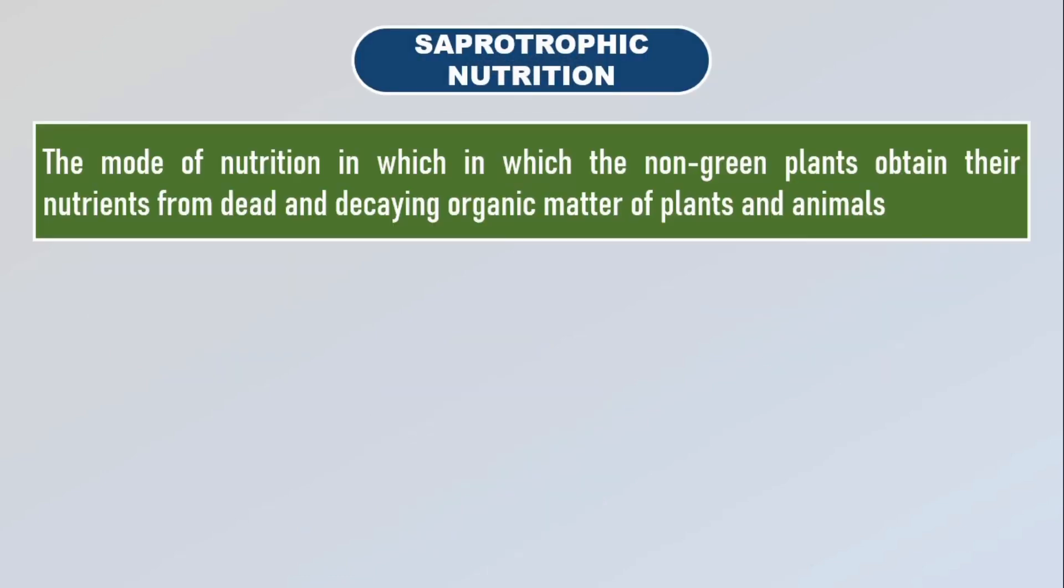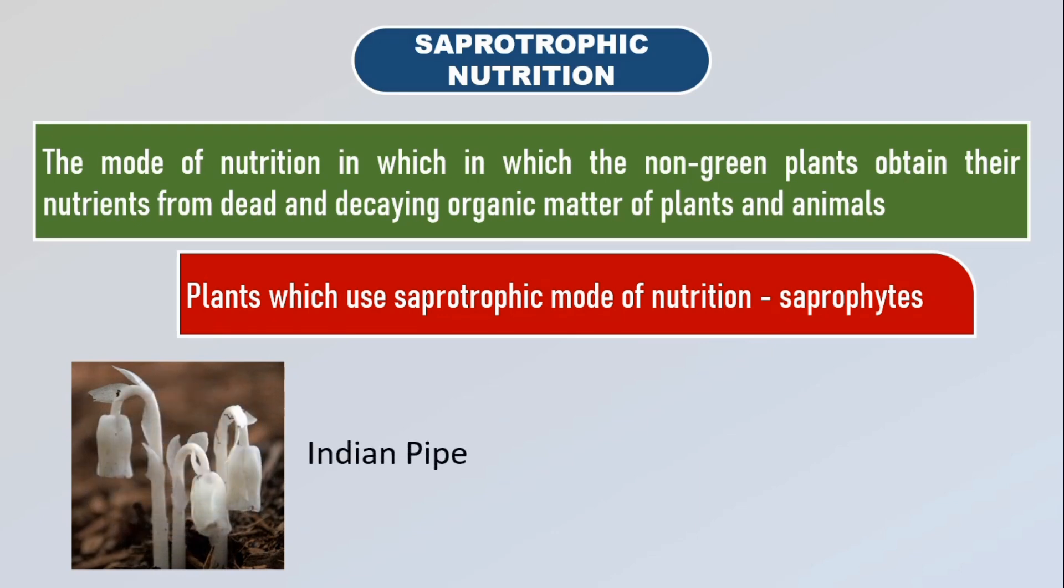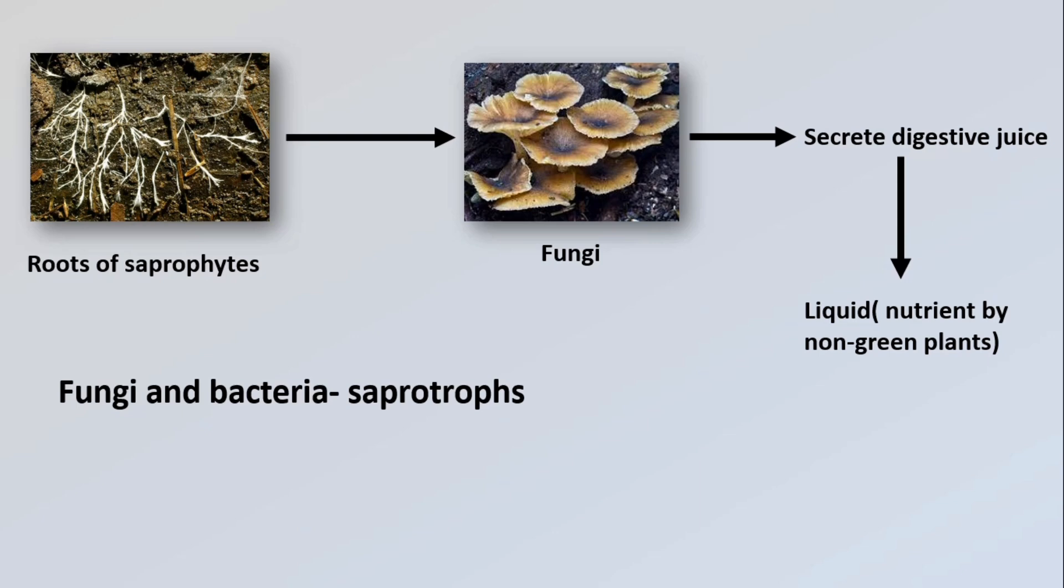Saprotrophic nutrition is the mode in which non-green plants obtain their nutrients from dead and decaying organic matter of plants and animals. The plants which use saprotrophic mode are called saprophytes, like Indian pipe and coral root. The roots of saprophytes contain organisms called fungi which secrete digestive juices on the dead matter and convert it into liquid used as nutrient. Fungi like mushrooms and yeast and bacteria are known as saprotrophs. Fungi were earlier considered to be plants but they form an entirely different category and are considered as a separate kingdom.